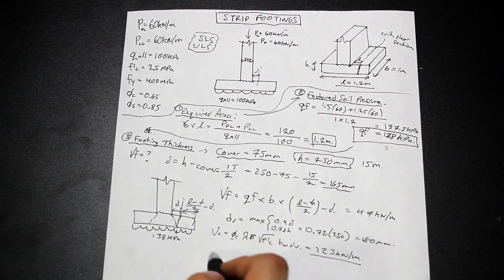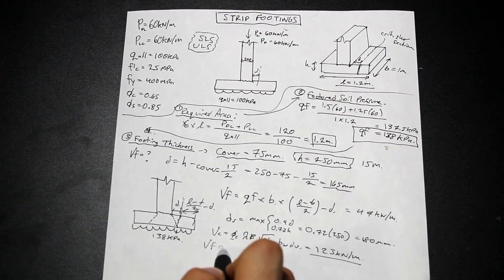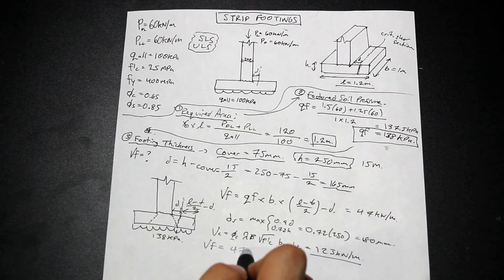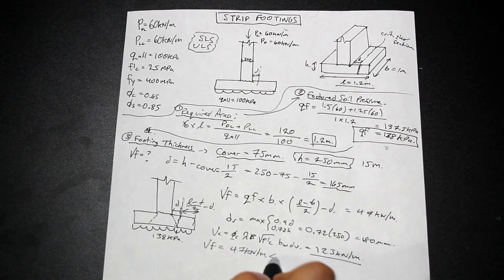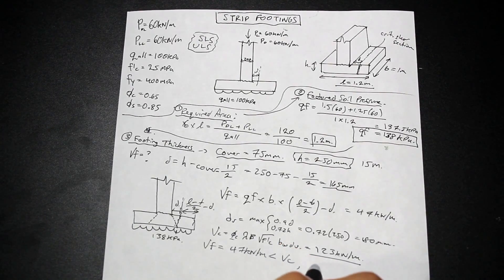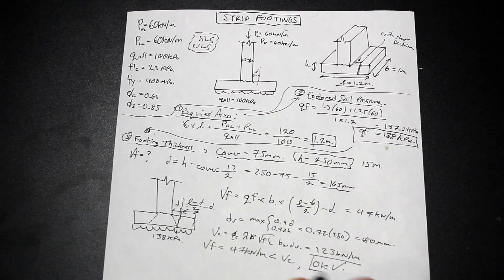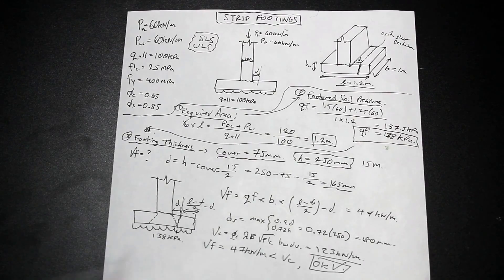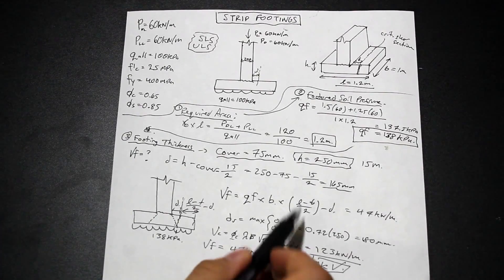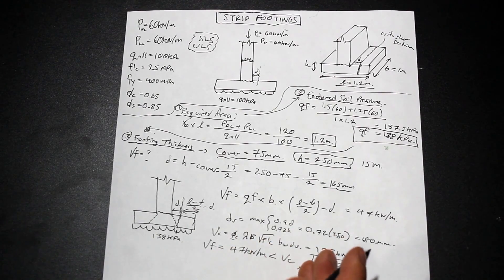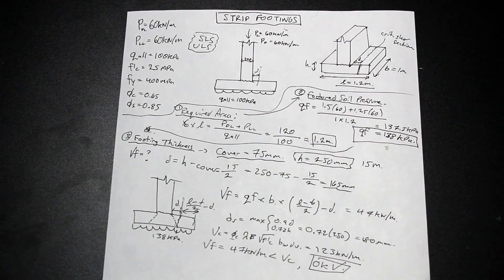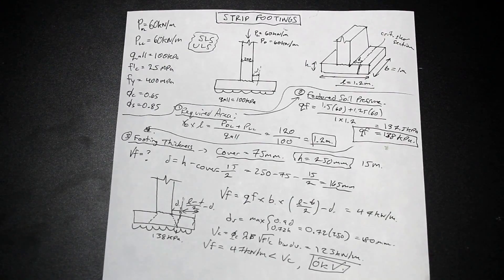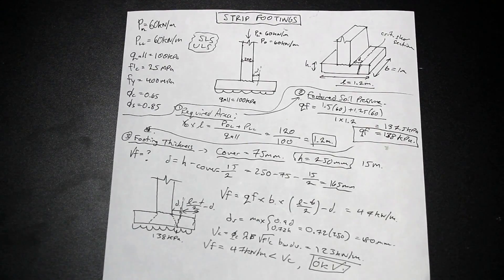And we have our VF. So since our VF, which is 47 kilonewton per meter, is less than our VC, we are okay. So this 250 millimeters is more than enough for shear. 123 is much more than 47. And we don't need shear reinforcement.